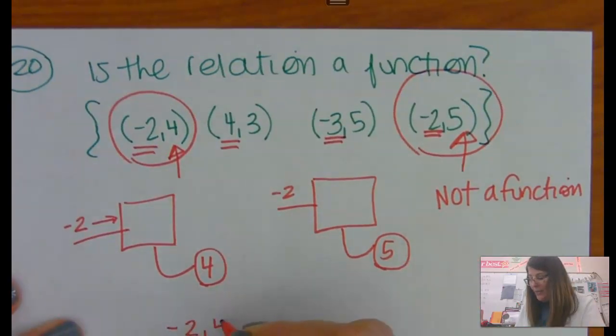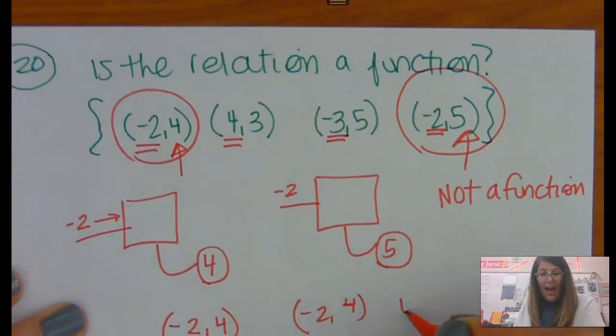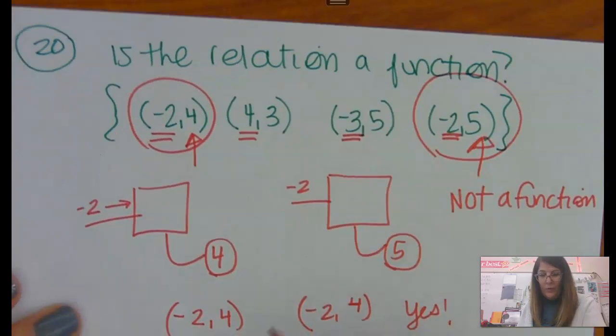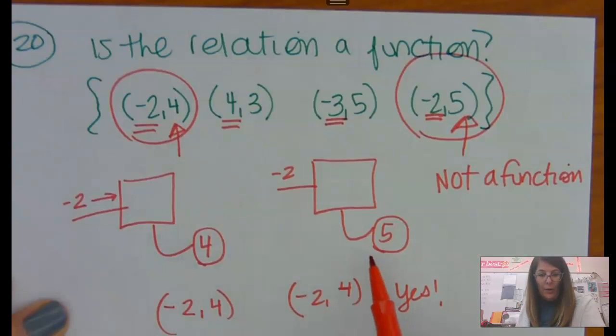If I had negative 2, 4, and I had another negative 2, 4, that would be a function, where this one is not. Because I could just repeat the same number. It wouldn't mean the machine was broken.